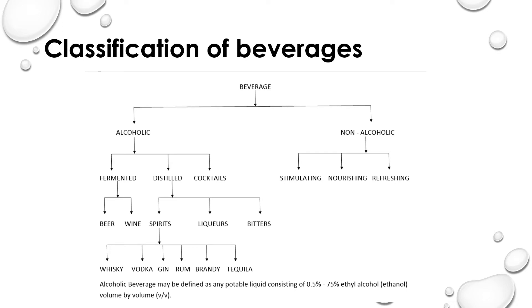Distilled alcohol beverages include spirits, liquors, and bitters. Coming to spirits — spirits are generally used for beverage purposes, and we can classify them as whiskey, vodka, gin, rum, brandy, and tequila. All of these are part of spirits. This is the basic classification of alcoholic beverages.